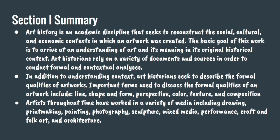Section one summary: Art history is an academic discipline that seeks to reconstruct the social, cultural, and economic context in which an artwork was created. The basic goal is to arrive at an understanding of art and its meaning in its original historical context. Art historians rely on a variety of documents and sources to conduct formal and contextual analyses. Important terms used to discuss formal qualities include line, shape and form, perspective, color, texture, and composition. Artists throughout time have worked in a variety of media including drawing, printmaking, painting, photography, sculpture, mixed media, performance, craft and folk art, and architecture. That is it for video A. I will be testing you on this at our next meeting on Friday, January 20th. See you later, pentathletes — I'll be posting video B on Friday, hopefully!